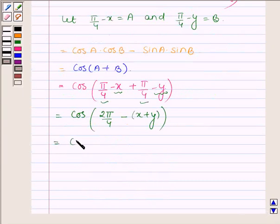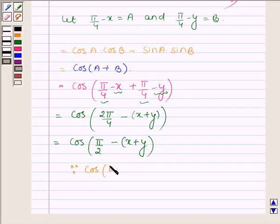Now adding π/4 and π/4 gives 2π/4 minus taking common from -x and -y we have x + y. Which is further equal to cos(π/2 - (x + y)).